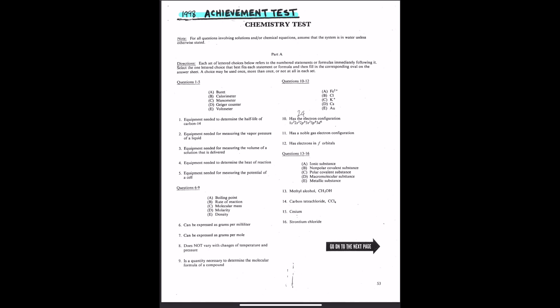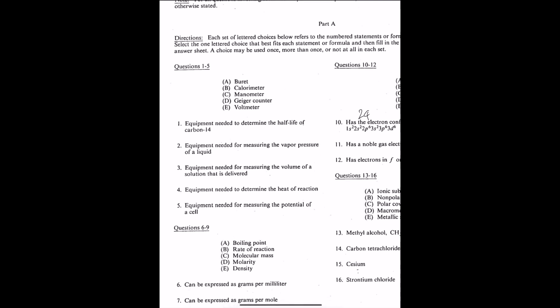Number one, equipment needed to determine the half-life of carbon-14. Carbon-14 is an isotope of carbon that is radioactive. Among the choices here, the only tool that is related to measuring the alpha ray emitted by this carbon-14 is a Geiger counter. So it's just D.